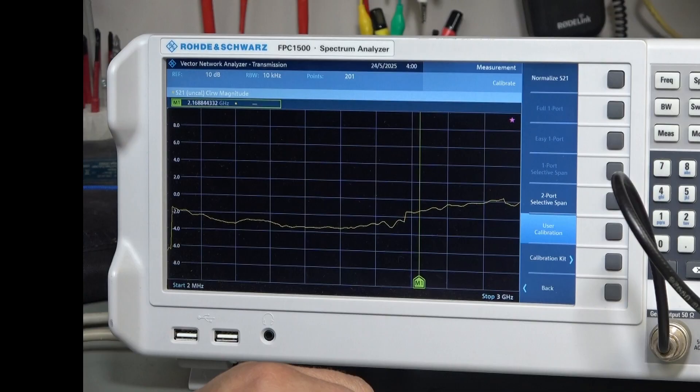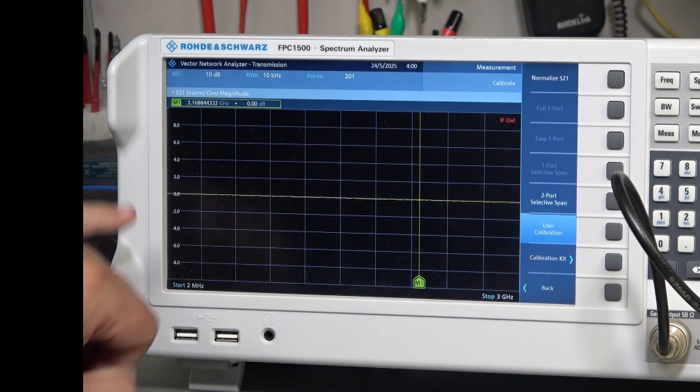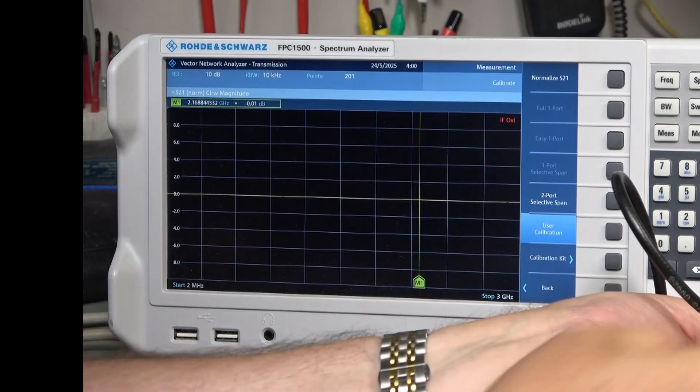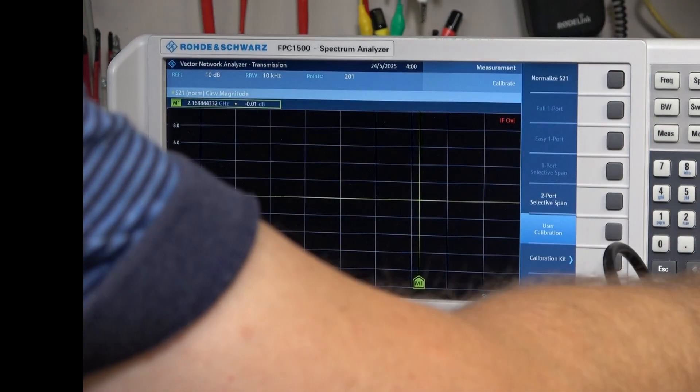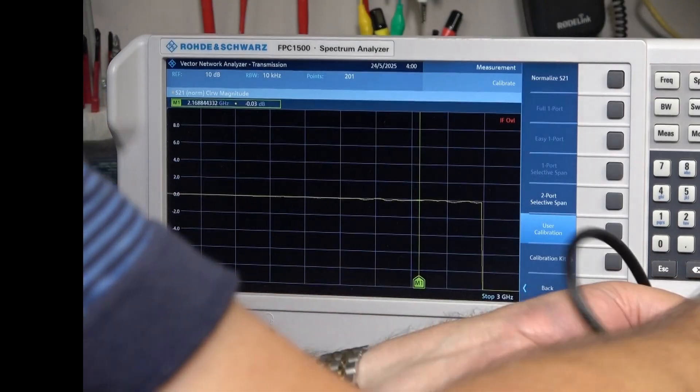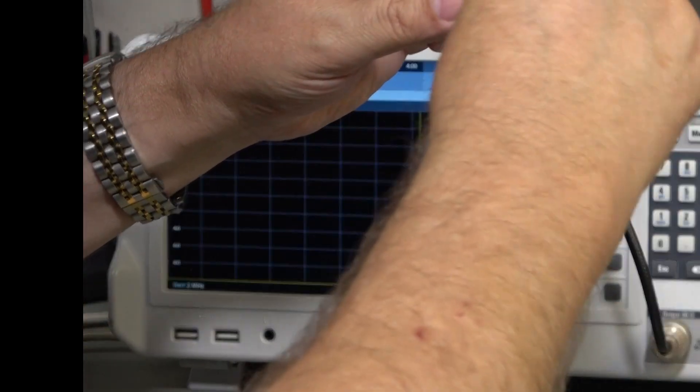The first job is to calibrate out any effect of the cables. I've just done that and we can see a nice straight line at zero dB all the way up to three gigahertz. Now I just need to insert the device under test, keeping the same connectors so nothing changes apart from the device.